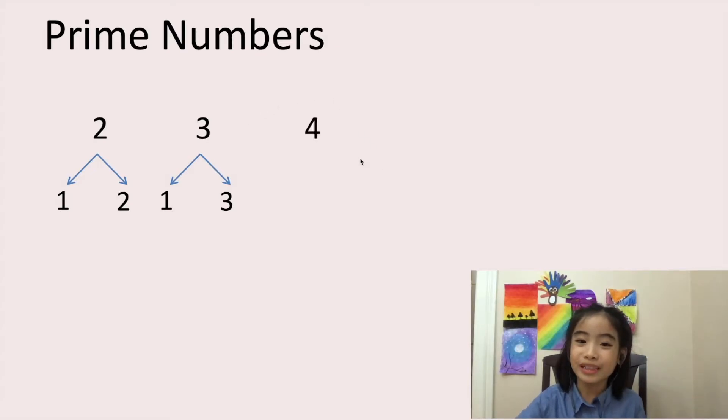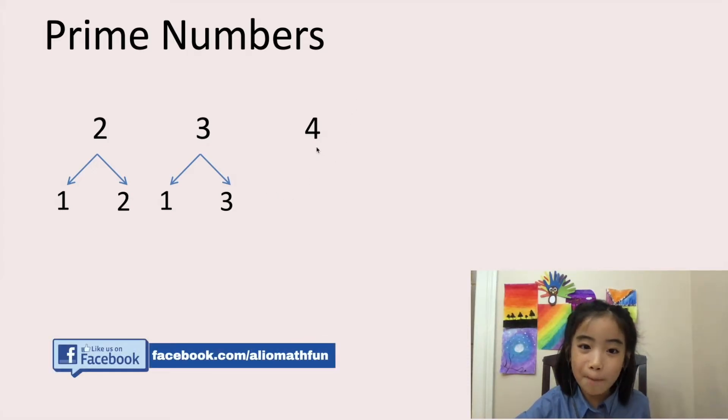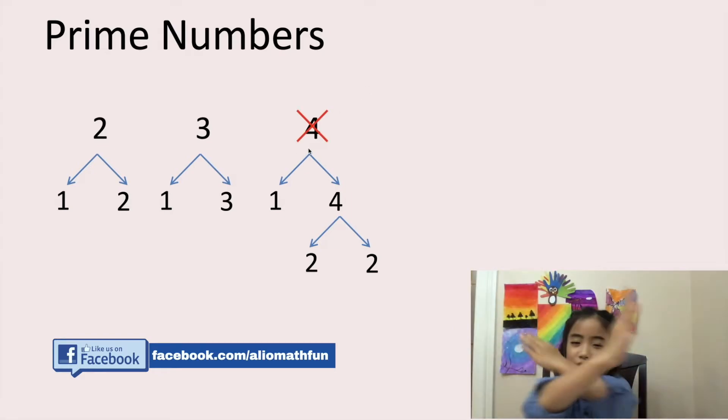Moving on to four. Is four a prime number? Well, four can be divisible by one and four. But four can also be divisible by two and two. So four is not a prime number because it can be divisible by more than two numbers. So let's go ahead and cross the four out.